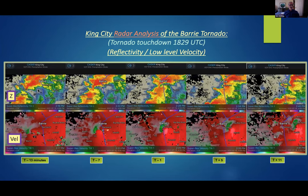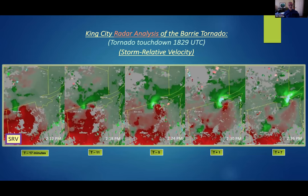Jumping into radar, the top row shows reflectivity where you can see a cell merger. T-zero is the time of tornado touchdown. At T-minus-13 in the first frame you can sort of see a cell to the south merging with the northern cell over Berry just prior to tornado touchdown to the west of Highway 400. The velocity scans indicate a tightening couplet, perhaps more dramatic in storm-relative velocity. These are all from the S-band radar newly installed at King City just weeks prior to this outbreak.